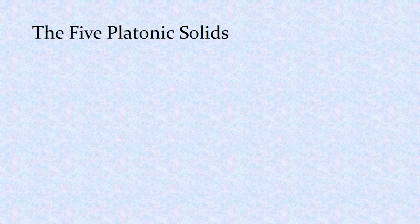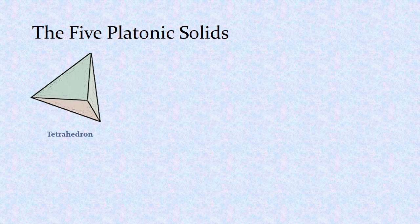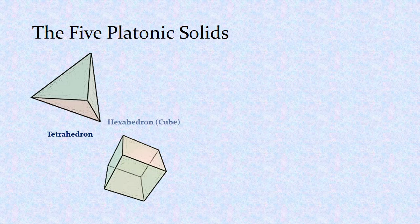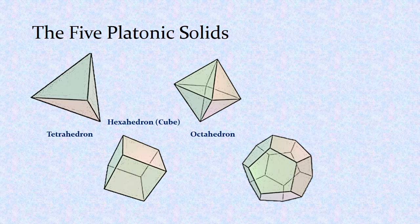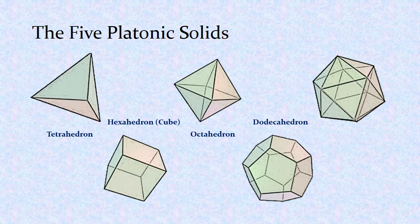Here are the five Platonic solids. The tetrahedron, which has four faces. The cube, more correctly called the hexahedron because it has six faces. The octahedron, having eight faces. The dodecahedron, which has 12 pentagons as faces. And finally the icosahedron, which has 20 faces, all consisting of equilateral triangles.